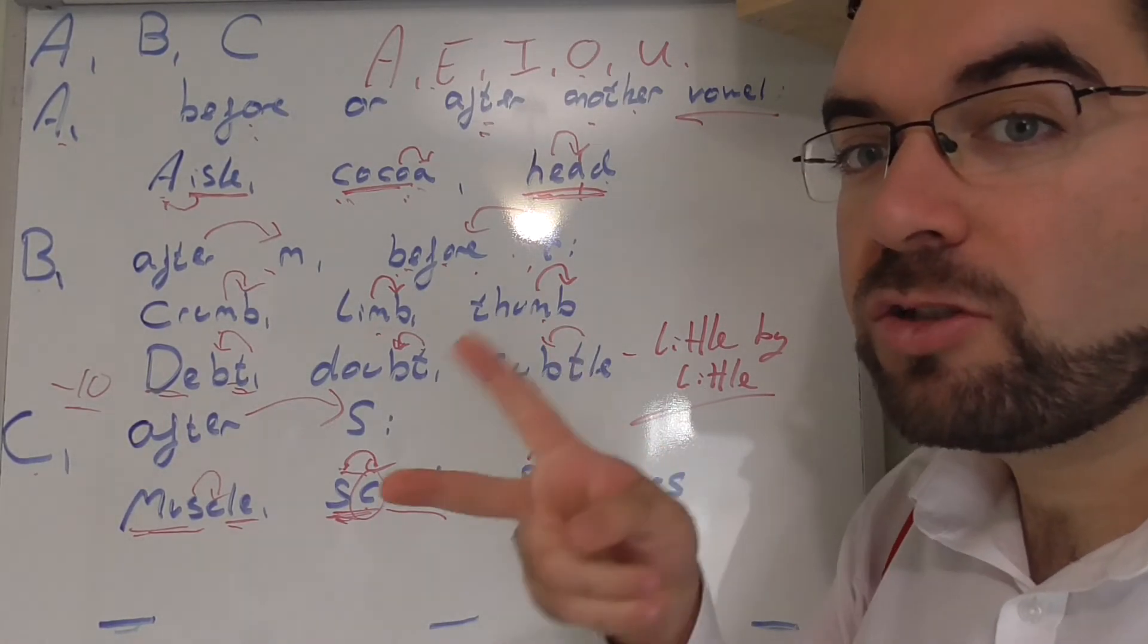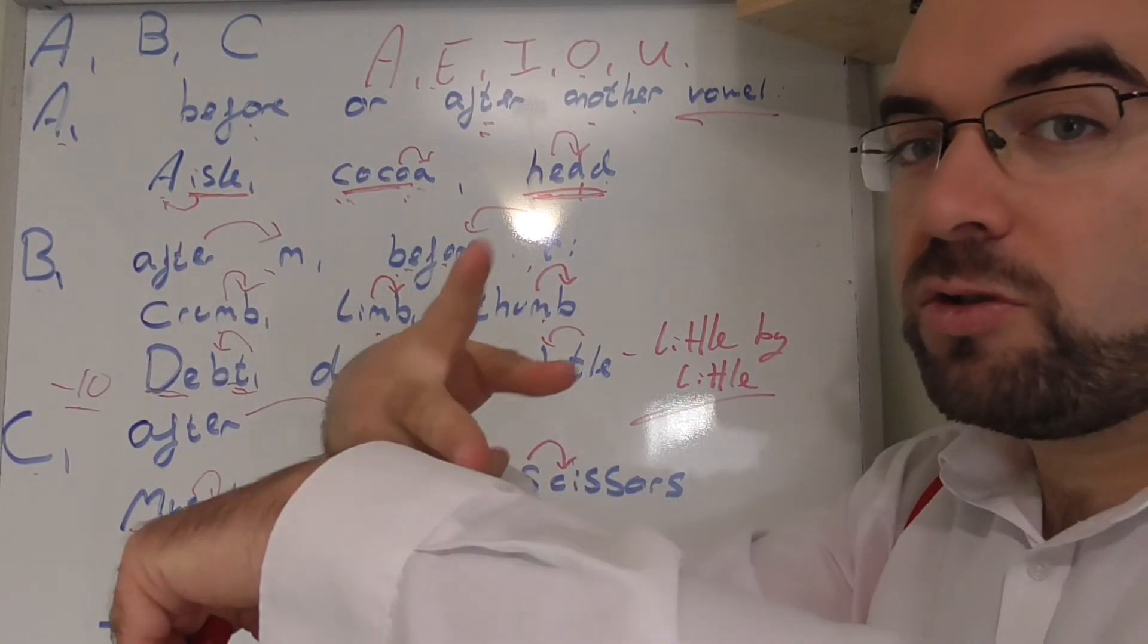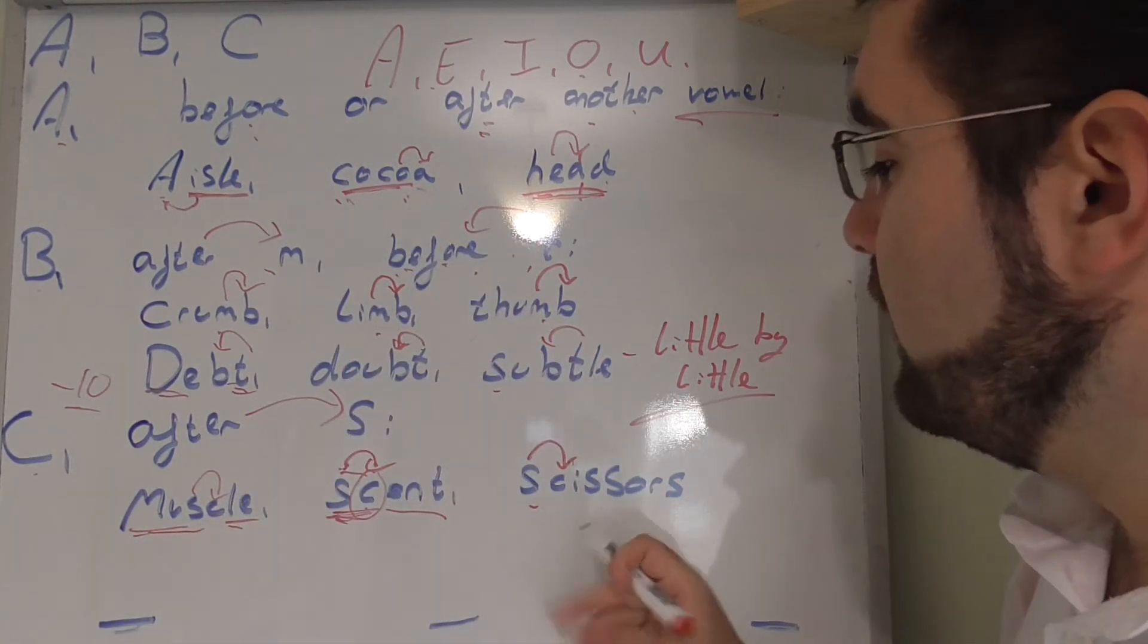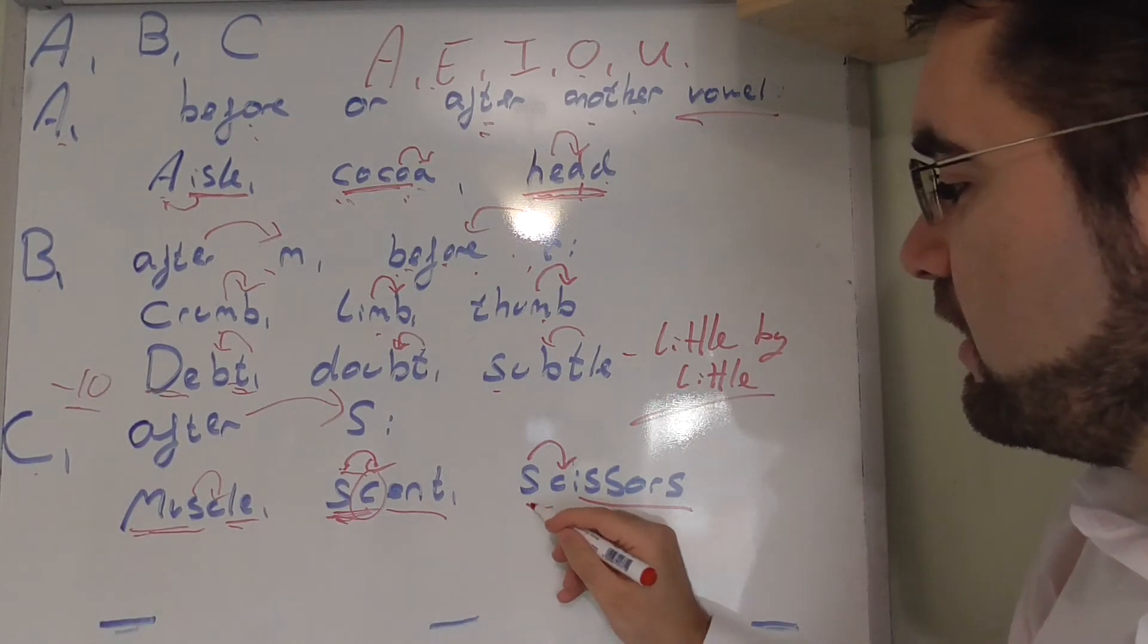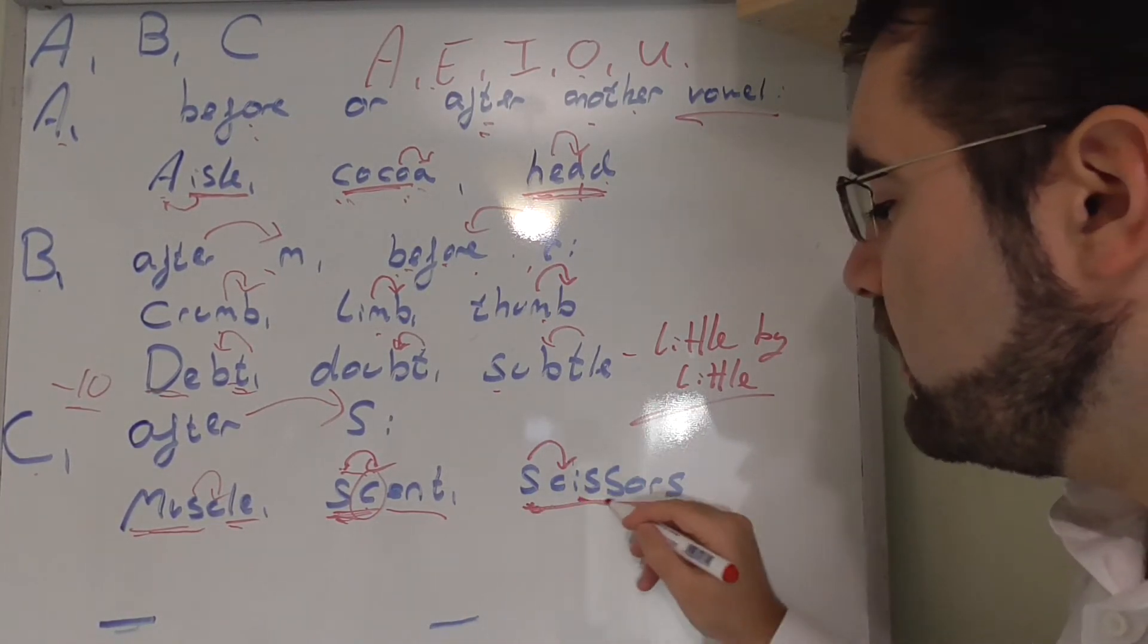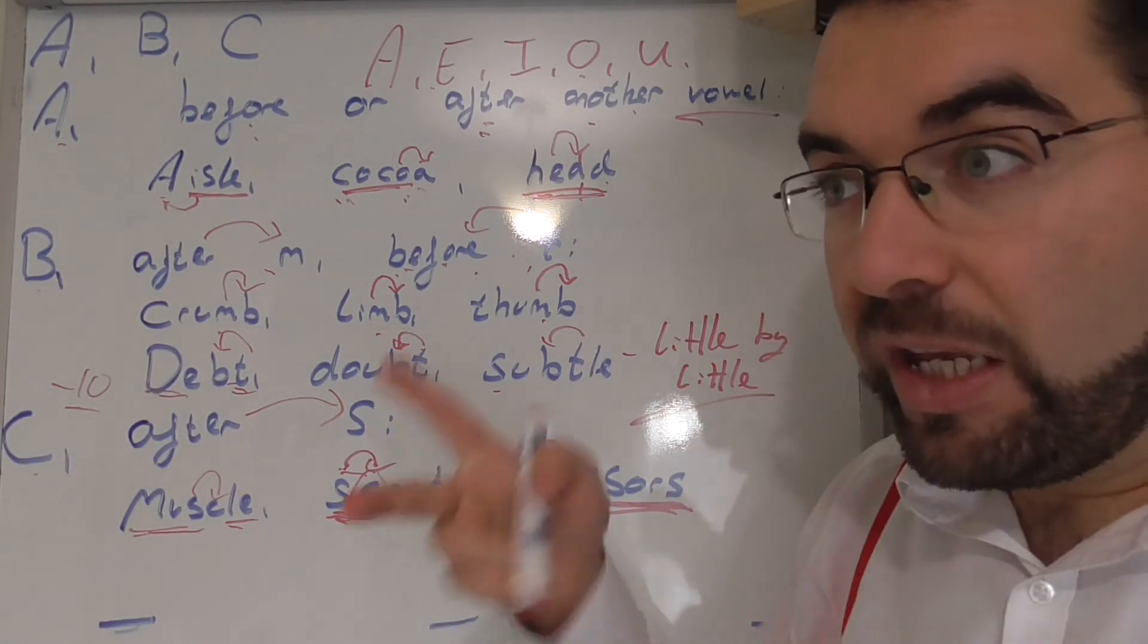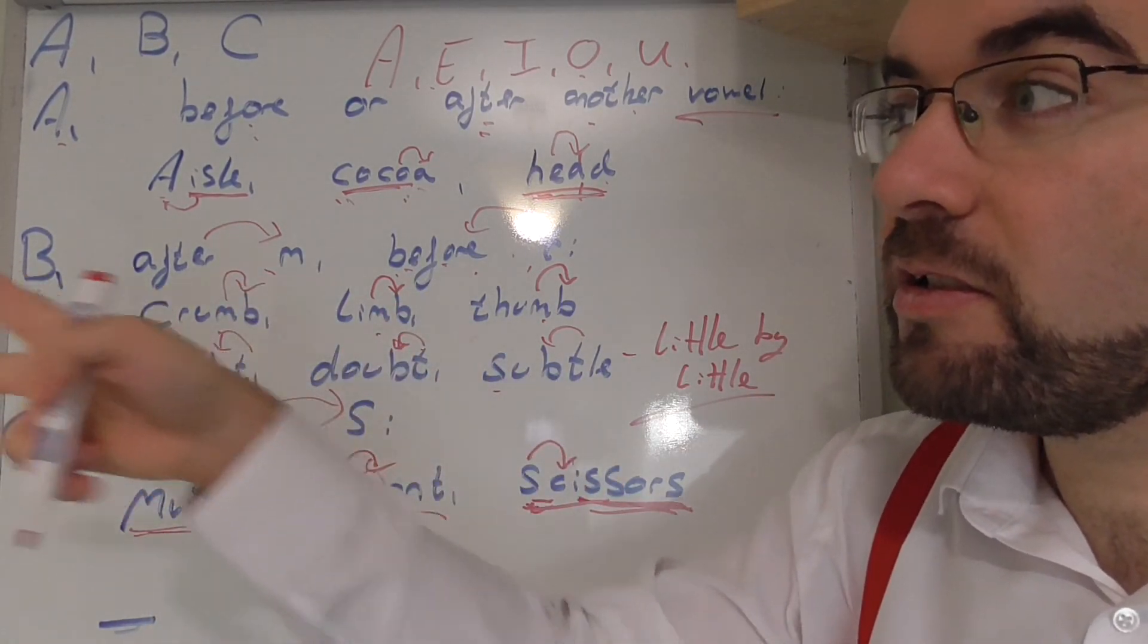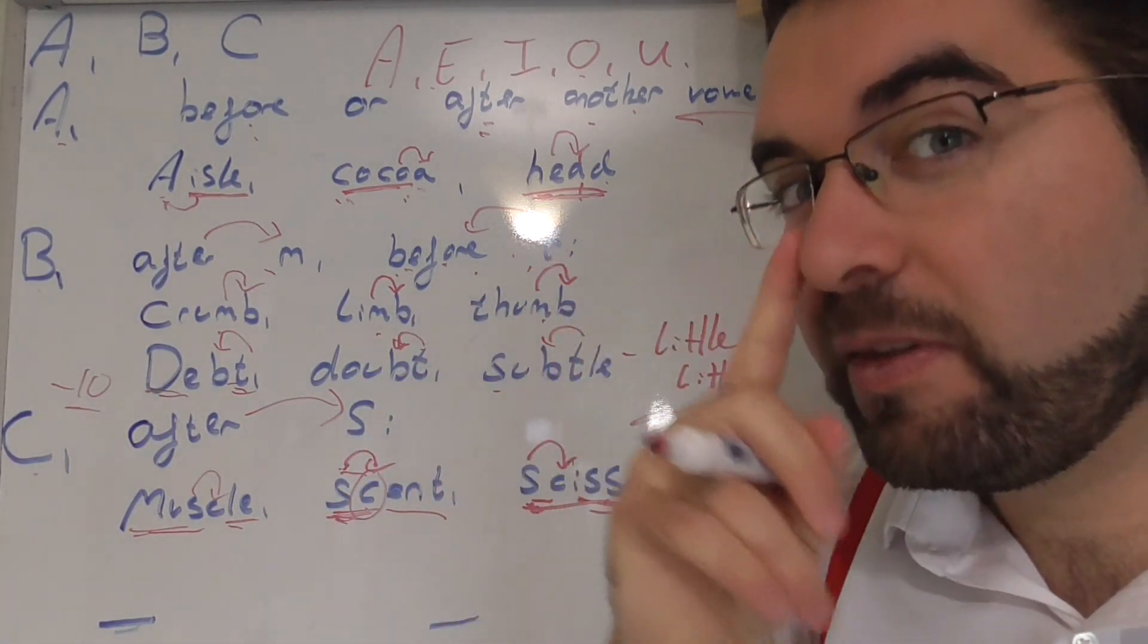Scent. And scissors. Scissors. It's not skiz. It's scissors. Siz. Not skiz. Scissors. We have scissors. How cool is that? Language explorers. Let's keep that.